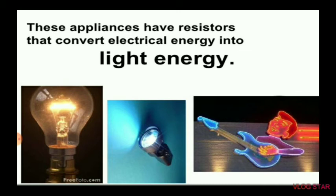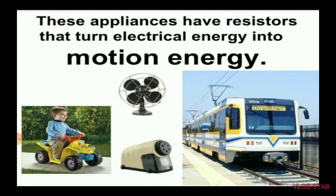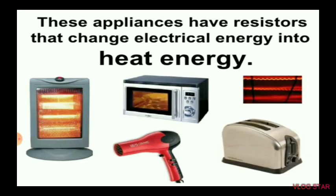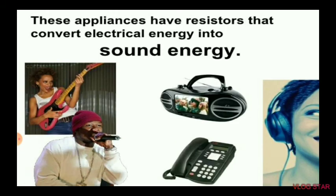Some appliances have resistors that turn electrical energy into motion energy, and others convert electrical energy into heat energy, like ovens, toasters, and hair dryers.